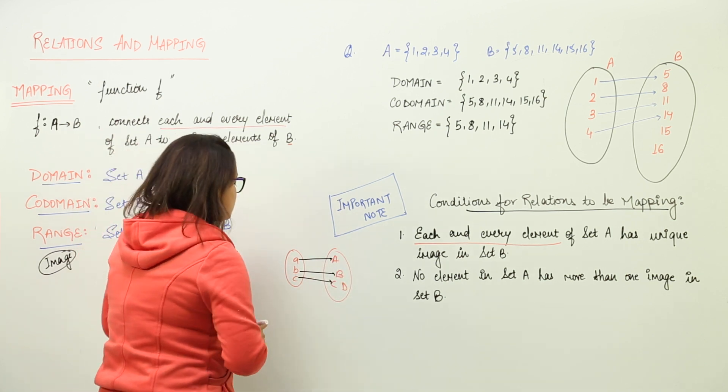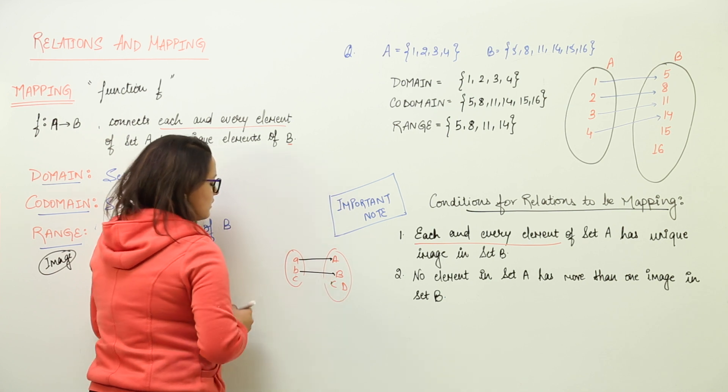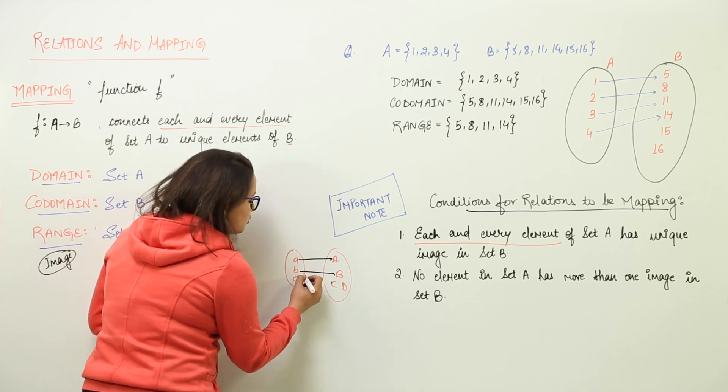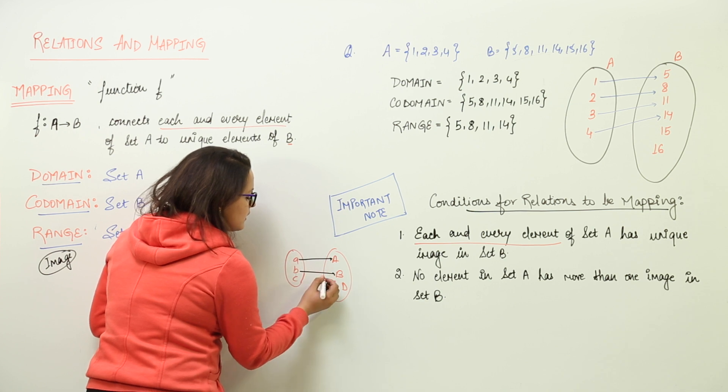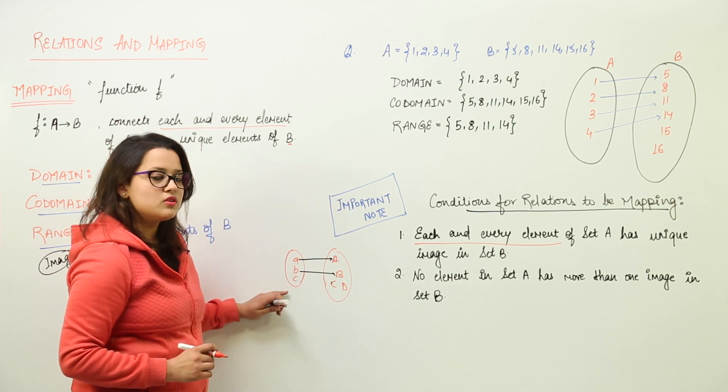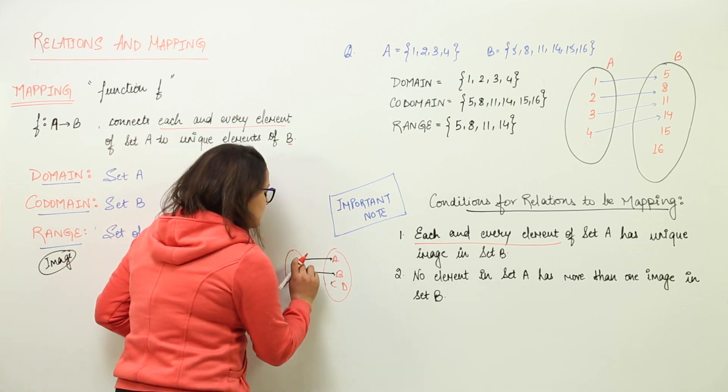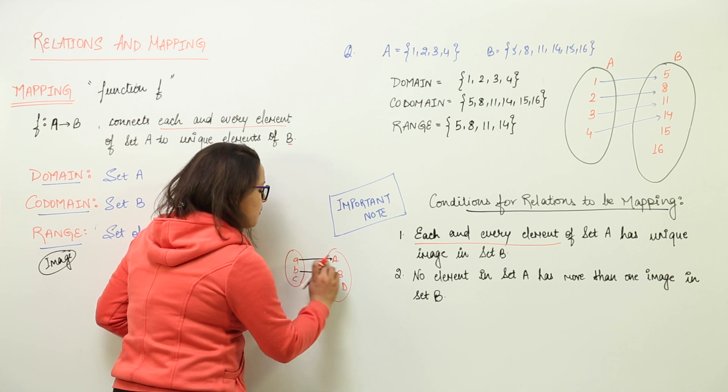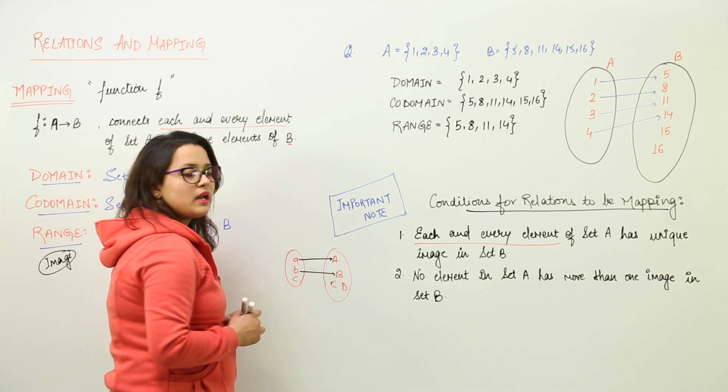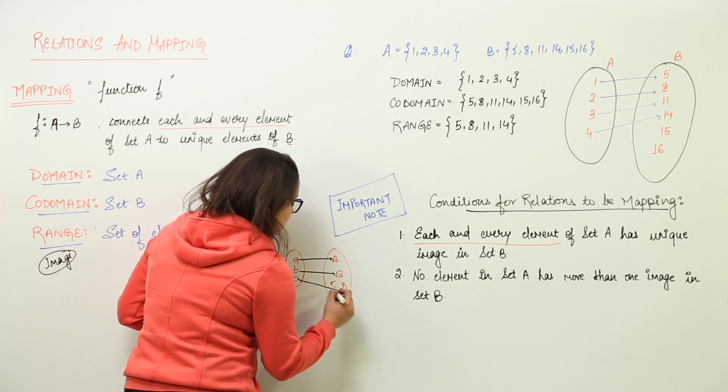There are the two conditions. You cannot have a mapping done like this. Like, here you have the two elements of the first set mapped with the two elements. And you have still one element pending. You cannot do this. According to first one, you have to have the elements of first set mapped with distinct values or unique values.